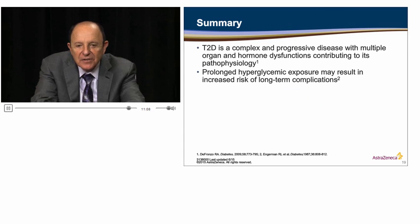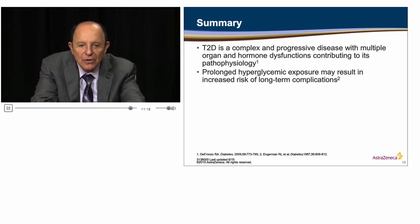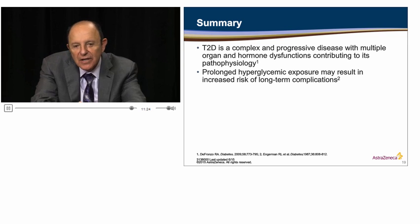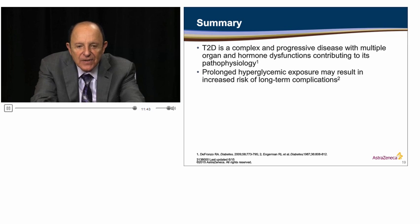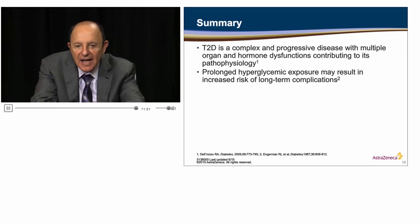Before we conclude, I want to summarize a few key points. Type 2 diabetes is a complex and progressive disease with multiple hormone and organ dysfunctions contributing to its pathophysiology. Furthermore, studies show that prolonged hyperglycemic exposure results in increased risk of complications. In future chapters of this series, we will discuss how pathogenic abnormalities discussed here influence the clinical management of type 2 diabetes and the benefits of early proactive treatment. Thank you for joining today, and be sure to listen to Chapter 2, Challenges in Diabetes Management.